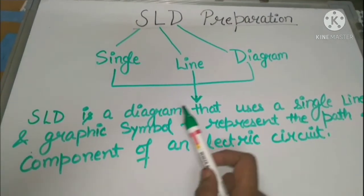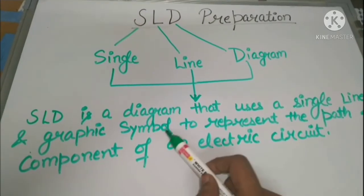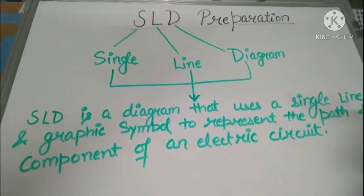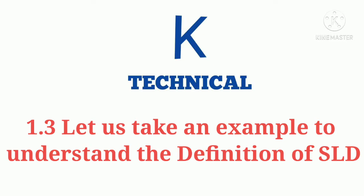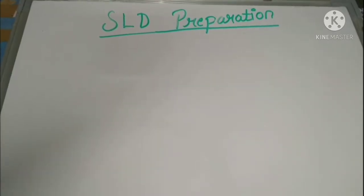So we can say SLD is a line diagram that uses a single line and graphic symbol to represent the path and component of an electrical circuit. Now let us take the example of SLD preparation.